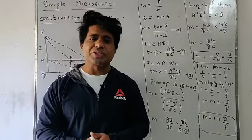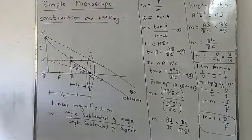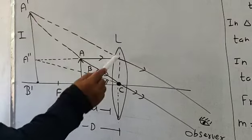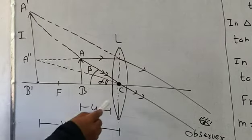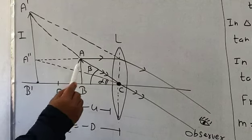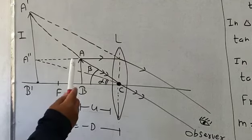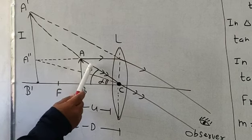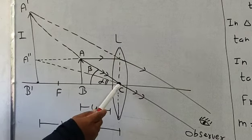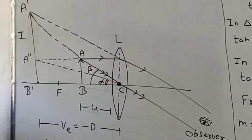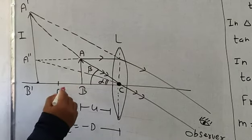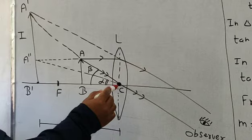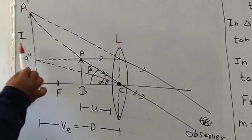Now we will discuss its construction and working. As you can see in this diagram, there is a double convex lens L — that is the simple microscope. AB is the object. We know every object emits light rays, so AB emits light rays: one ray is incident and gets refracted, another ray passes through the optical center. Since the object is placed between the principal focus and the optical center, the image will form beyond the object.